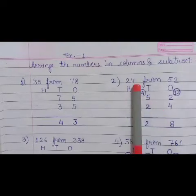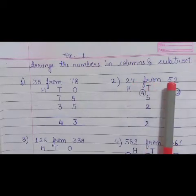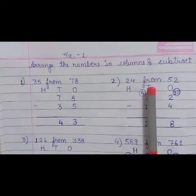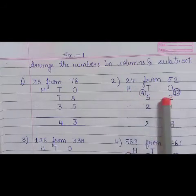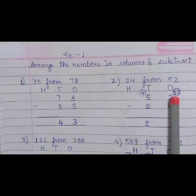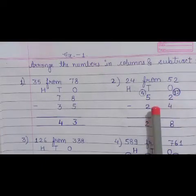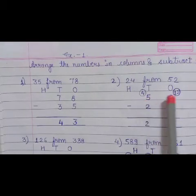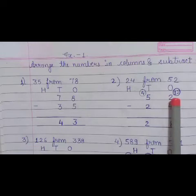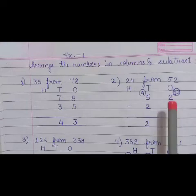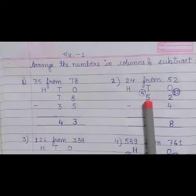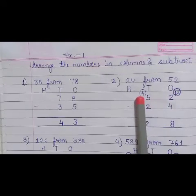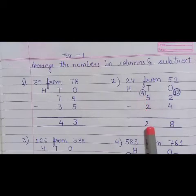Now question number 2nd. 24 from 52. 52 meinse 24 ko hume subtract karna hai. So write 1s, 10s and 100s. Then write 52 minus 24. 2 minus 4, it is not possible. So take carry 1 from this 5 in 2. So we can take carry 1 and it becomes 12. 12 minus 4 equals to 8. And 5 meinse 1 minus hoa to 4 bacha hai. So 4 minus 2 equals to 2. So 28 is our answer.